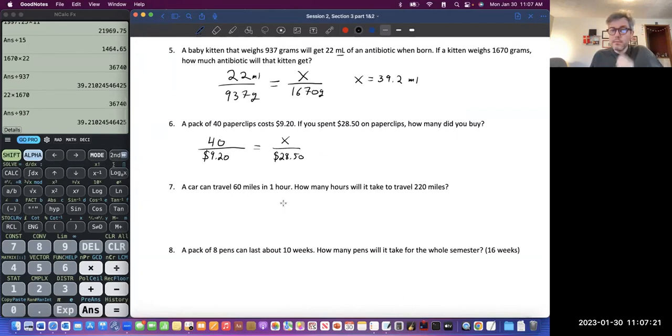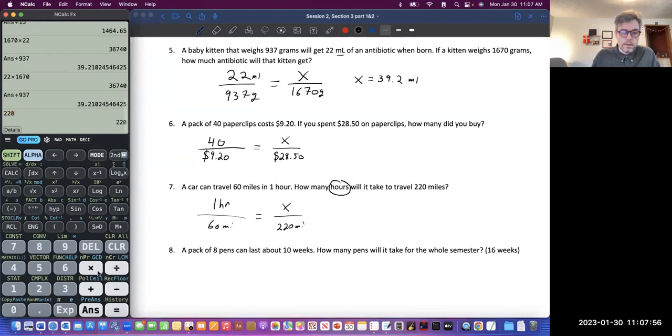For number seven, a car can travel 60 miles in one hour. How many hours will it take to travel 220 miles? It sounds like I'm solving for hours. What am I solving for? I'm solving for hours. First sentence is just information. They give me 60 miles in one hour. How many hours in this amount of miles? So one hour over 60 miles equals X over 220 miles. This should output the amount of hours.